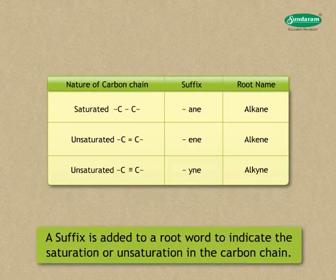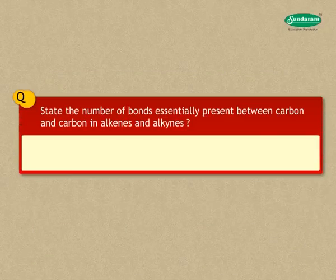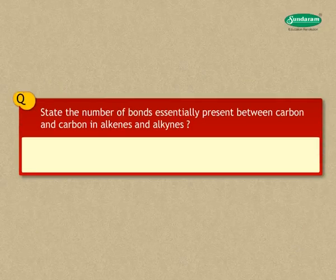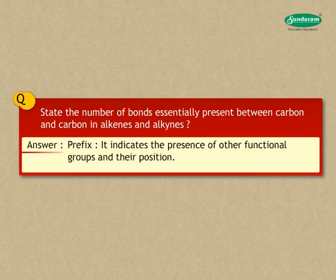A suffix denotes the type of bonds or functional group present in the carbon chain. A suffix is added to a root word to indicate the saturation or unsaturation in the carbon chain. A prefix indicates the presence of other functional groups and their position.